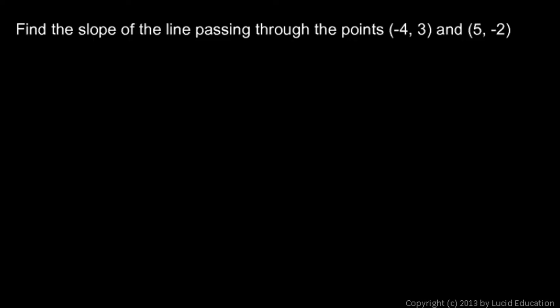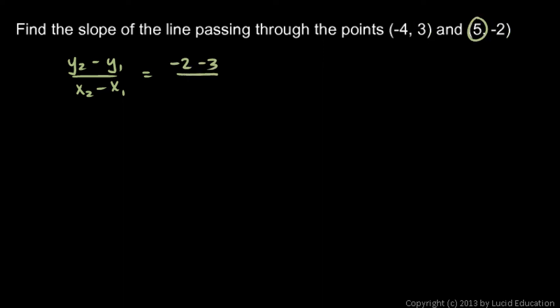Let's look at one more example. This example has some negative numbers, just to show that the same concept applies even when there are negative numbers — just don't get confused by them. Here's point 1 and point 2. So the slope will be y2 minus y1 over x2 minus x1. That's negative 2 minus 3 over 5 minus negative 4. Negative 2 minus 3 is negative 5, and 5 minus negative 4 is the same as 5 plus 4, which is 9. So the answer is negative 5 over 9. The line through those two points has a slope of negative 5 ninths.